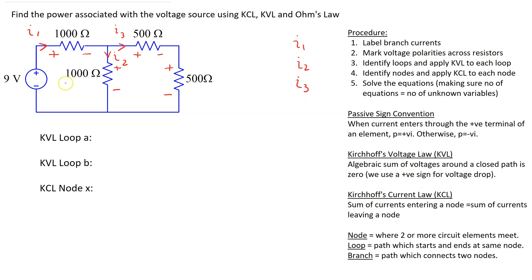Let's identify this loop and label it A. And then let's identify this loop and label it B. So this loop A starts here and comes back to the same point. Loop B starts here and comes back to the same point. Also we identify this node and label it as X. Now we are ready to apply KVL to each loop and KCL to each node.